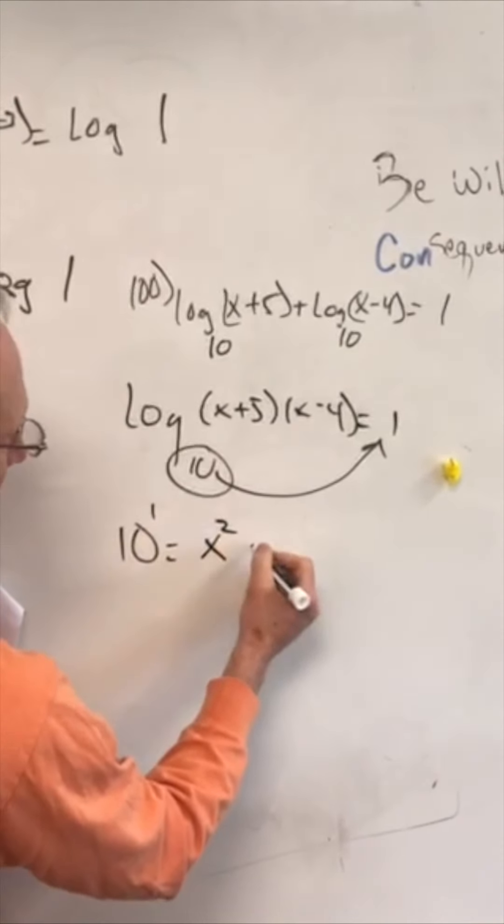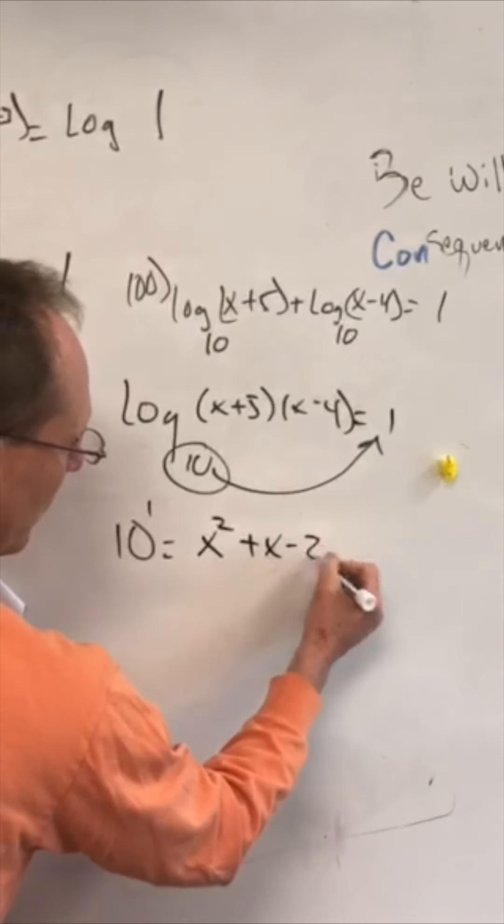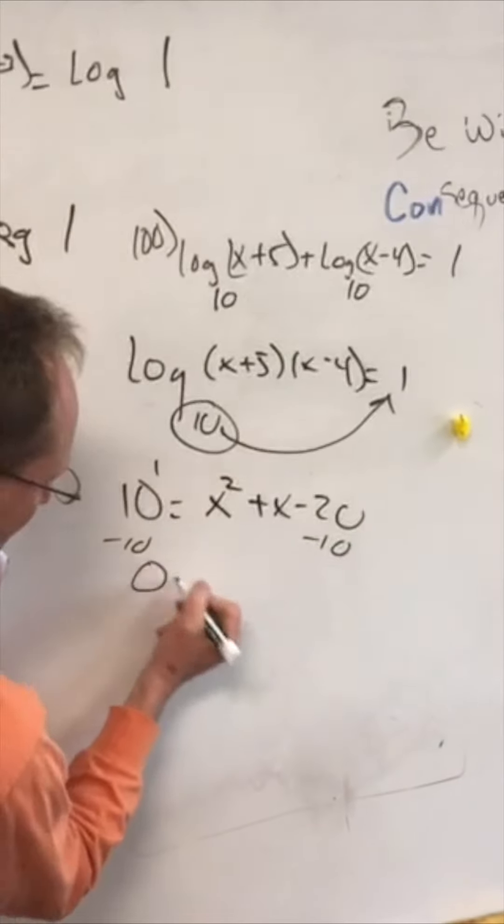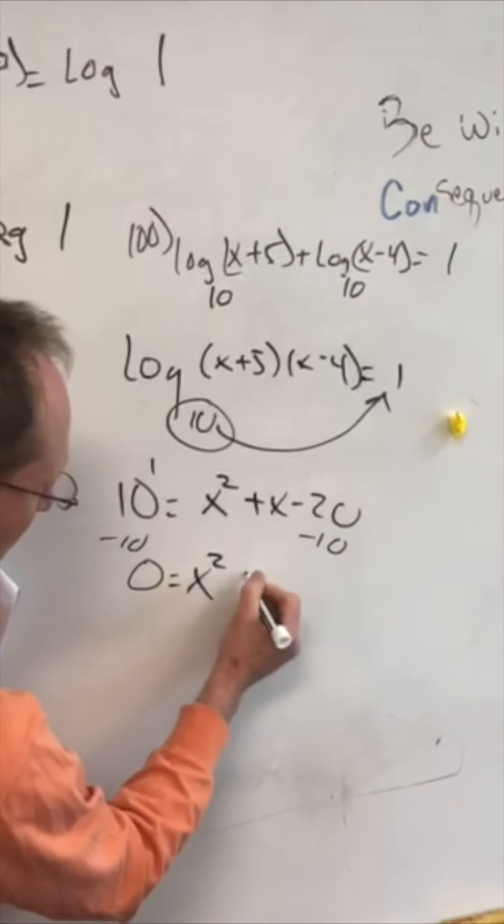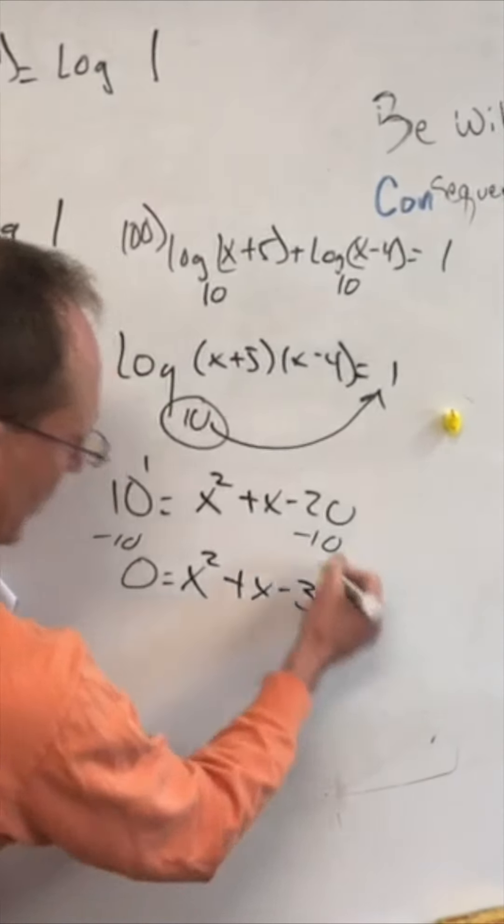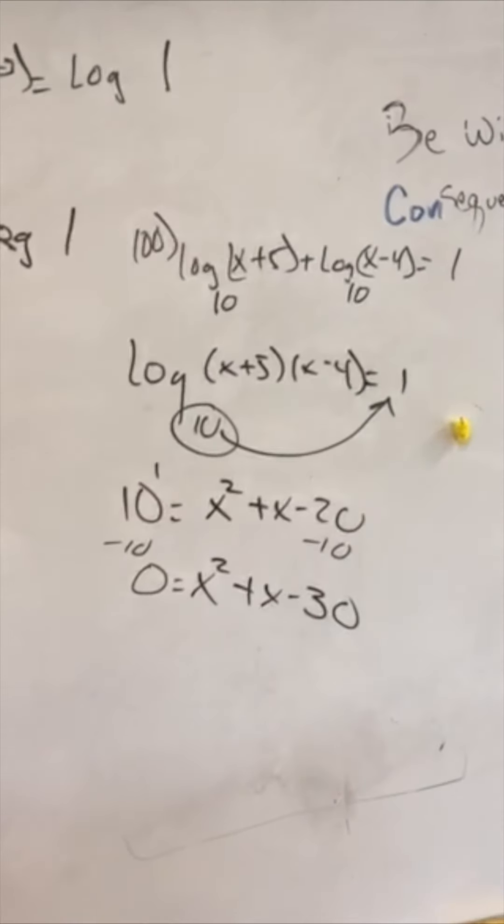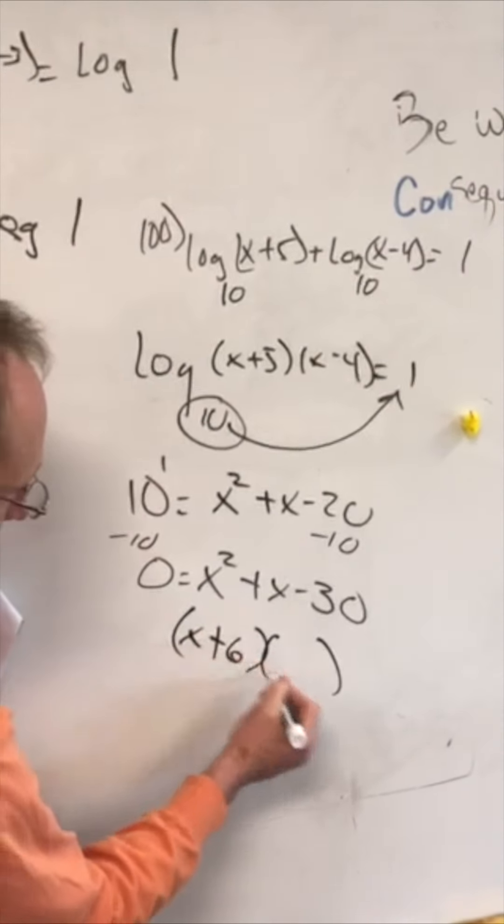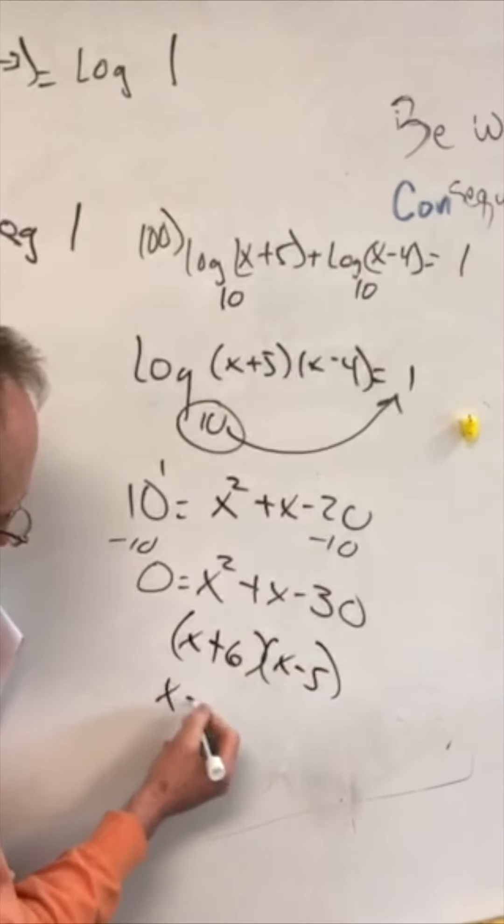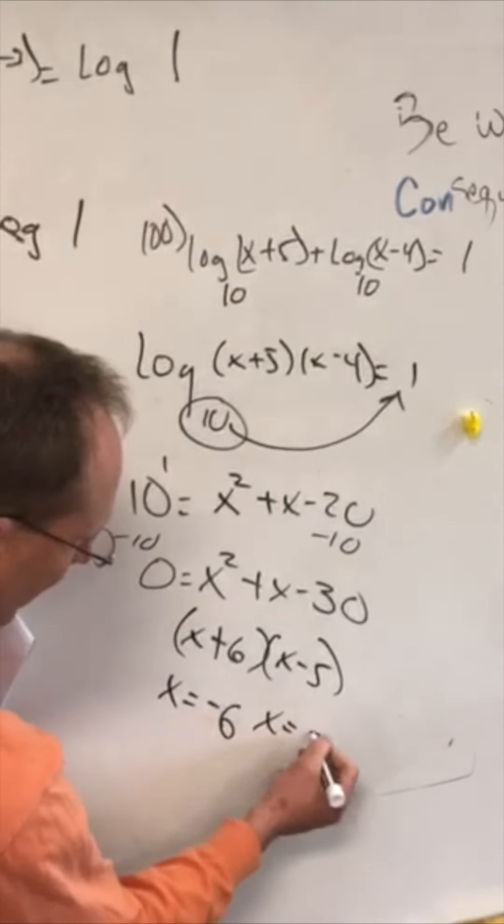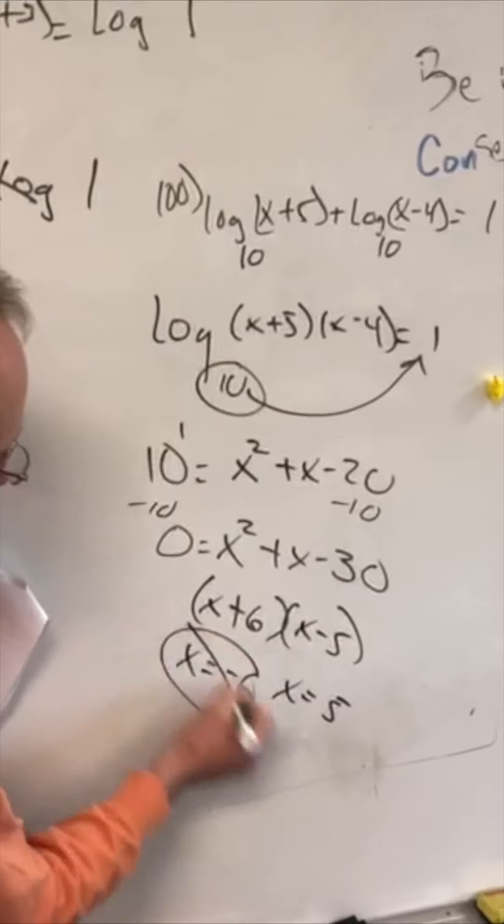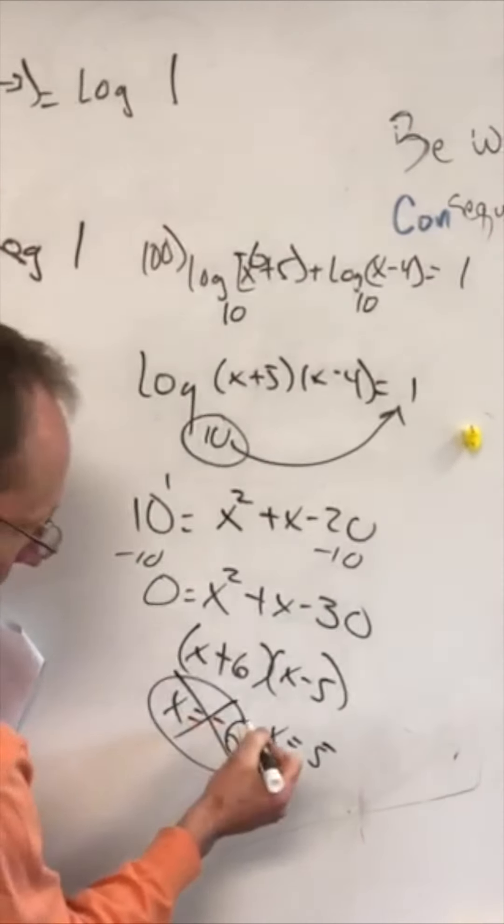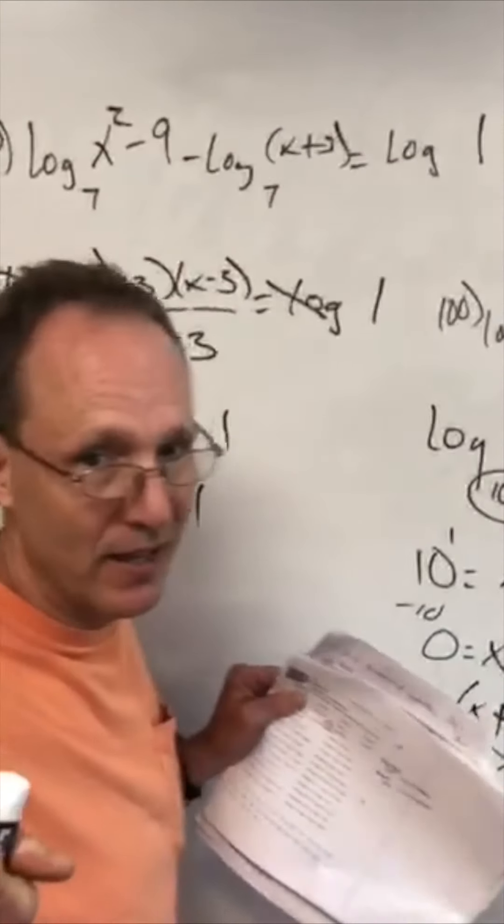We now subtract 10. And I'm going fast because we can only videotape for so long before it's hard to share. So now we got it like that. We factor it. Any negative answer gets thrown out. x plus 6. x minus 5. x equals negative 6. x equals 5. Negative 6 can't work in the log problem. When we put it back there, if it's negative, it won't work. It just takes positive answer. And that's how you do it.